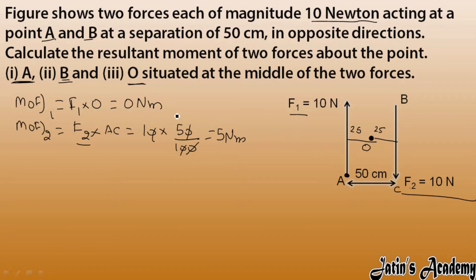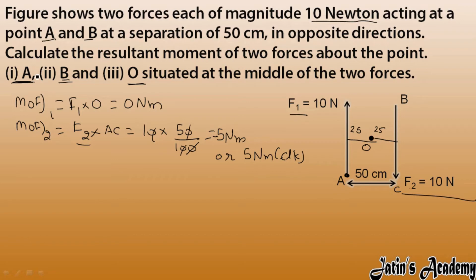The moment from F1 is zero, so direction doesn't matter there. For F2, checking the direction: the fixed point is A and the force causes clockwise rotation — clockwise means negative — so the result is minus 5 Newton meters, or 5 Newton meters in the clockwise direction. This completes Part 1.